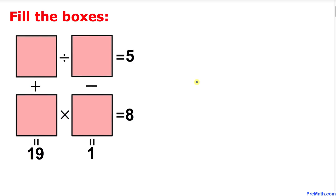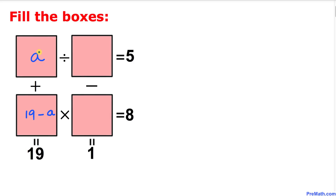Here's the very first step: we are going to label these boxes. Let me call this box 'a'. We are going to put a value in the next box such that if we add these two boxes we get 19. That number is going to be 19 minus a. And we can verify: a plus (19 minus a) — the a's cancel — gives us 19.